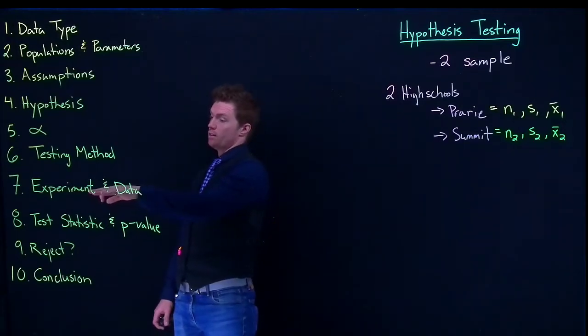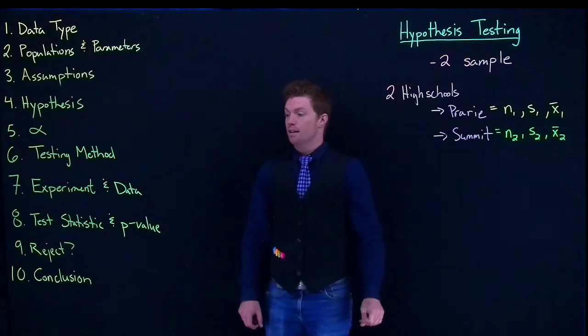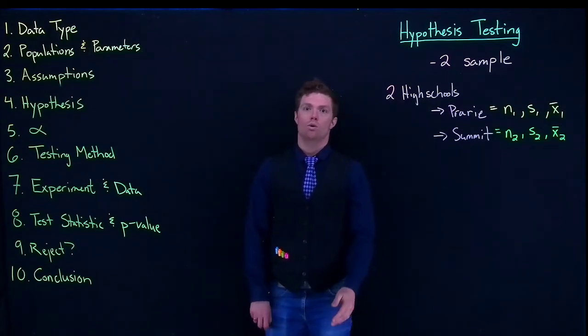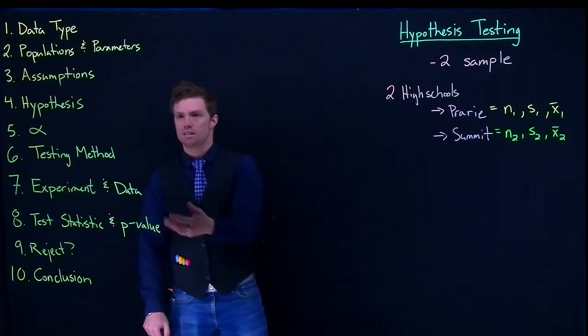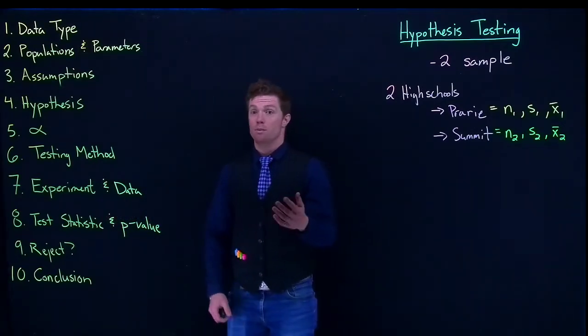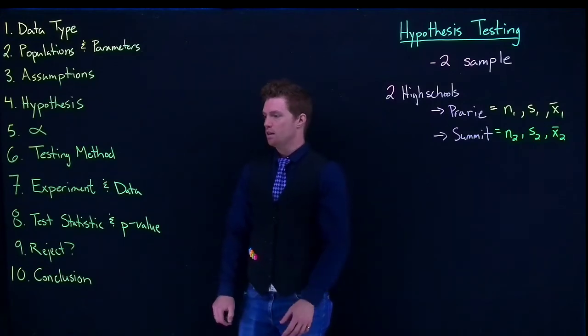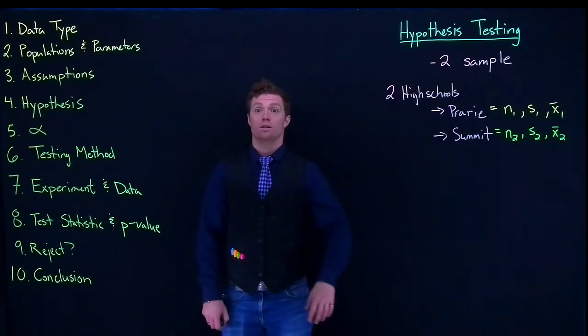Then once we get down to eight, we need to do our test statistic and our p-value. So when we get this, we're trying to figure out how many standard deviations away from the mean we are. If we're getting a t statistic, we're also going to introduce a new test statistic that we use for proportions, which is chi-squared.